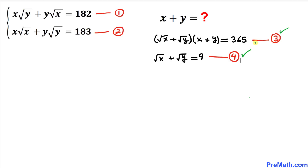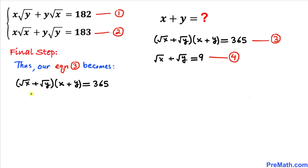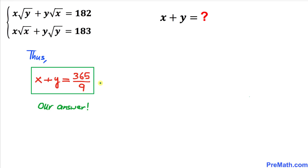Now focusing on equation 3, (√x + √y)(x + y) = 365, we substitute √x + √y = 9 from equation 4, giving 9 times (x + y) = 365. Dividing both sides by 9, we get x + y = 365/9. That's our final answer. Thanks for watching — please subscribe for more exciting videos!